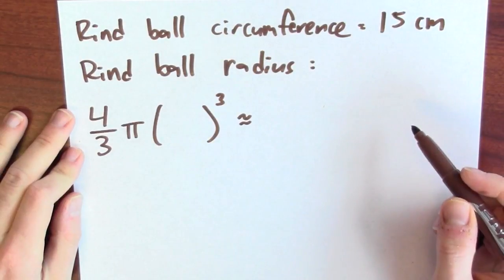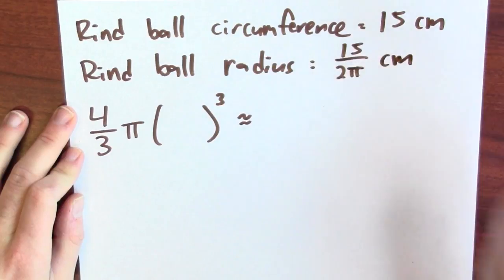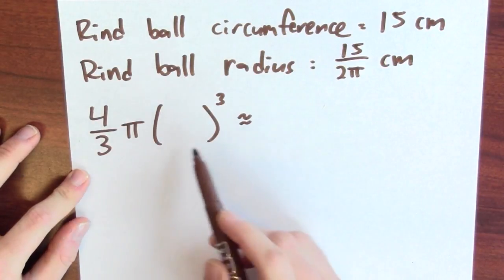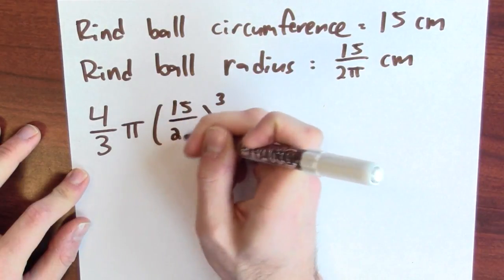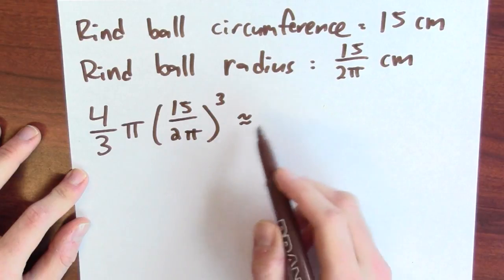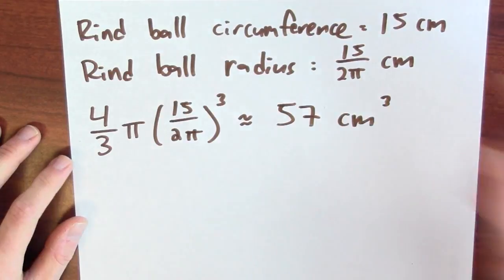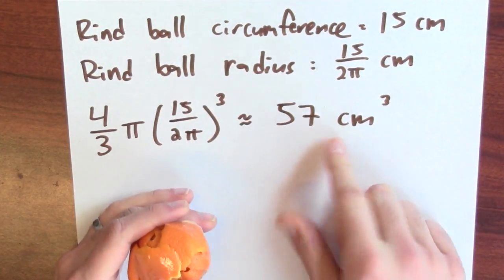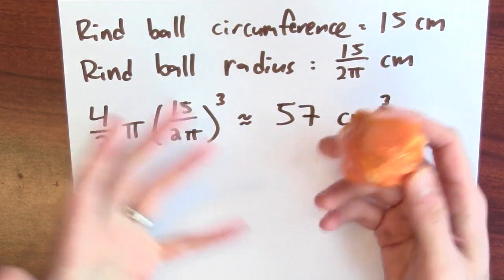That means my rind ball has a radius of 15 over 2π centimeters. And here, assuming my rind ball is a perfect sphere, this will be the volume of the rind ball. I've got to put the radius, which is 15 over 2π. So 4/3 π times the radius cubed. And that's about 57 cubic centimeters. I actually took all the rind off the orange, and the value that we got is pretty close to what the linear approximation told us the volume of rind should be.